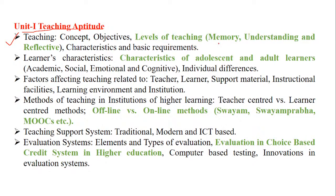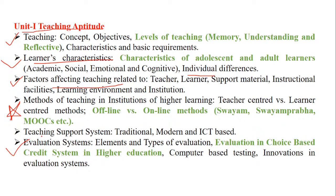We have completed Teaching in detail - concepts, objectives, levels of teaching, learner characteristics, stages of development, individual differences, and factors affecting teaching. In learner characteristics and factors, most questions appear as assertion-reasoning or statement-wise questions, so be careful when revising. Today we cover methods of teaching in institutions of higher education, and tomorrow we will cover the teaching support system.